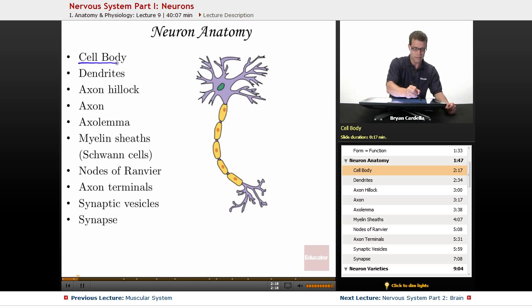The cell body is this part right up here. The cell body is where you're going to have most of the organelles that you see in a typical cell. This green dot is the nucleus. You're going to see mitochondria, ribosomes, etc.